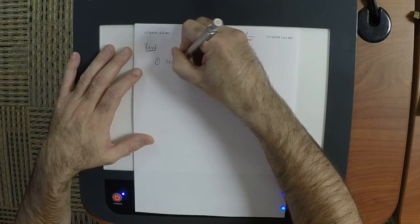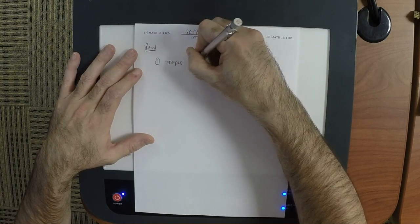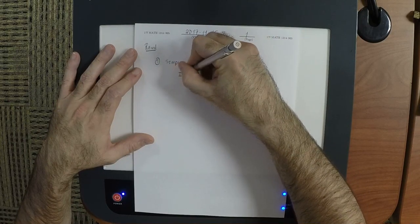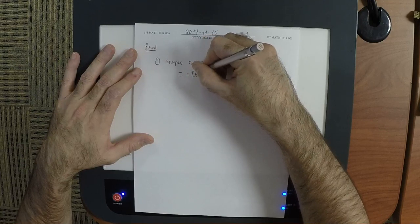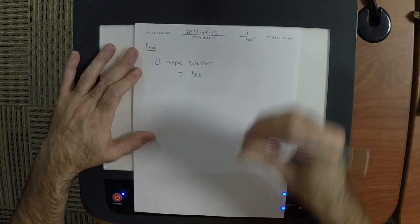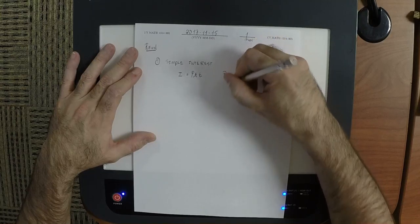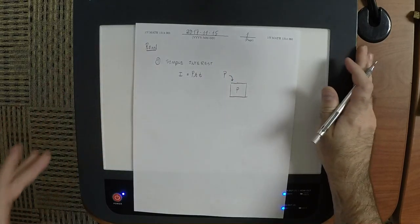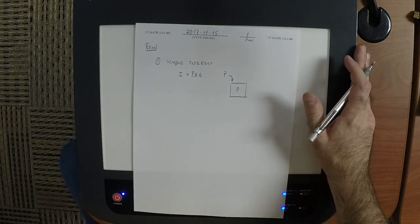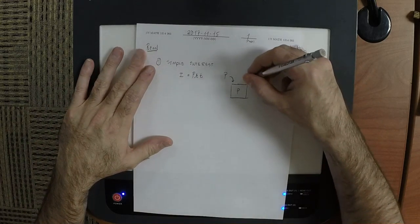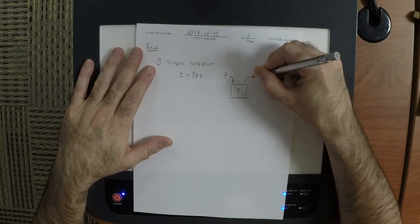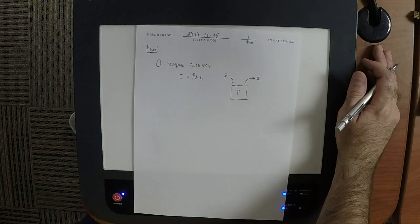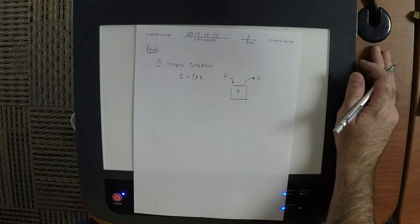One of them is simple interest. The simple interest model formula is I equals P times R times T. Conceptually, you take a deposit P, put it into an account, and the account balance is P for all time. Every time an interest payment is assessed, it is like you get a payment of I in the mail, like a check. But this is not the way it happens in real life.